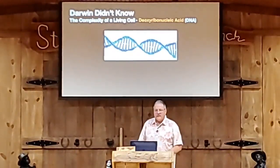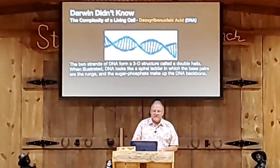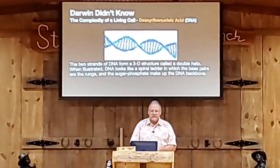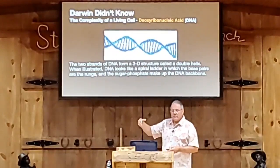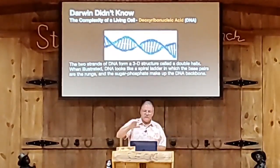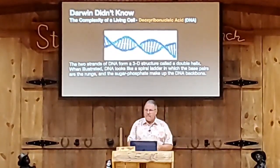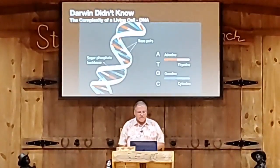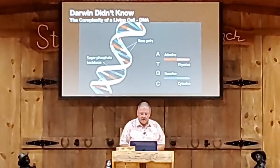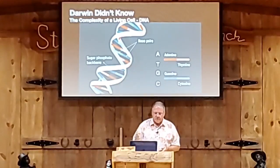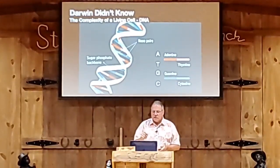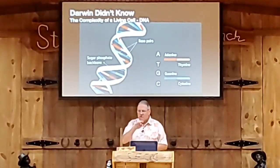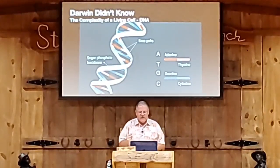Who knows what that is? That's DNA — deoxyribonucleic acid. Two strands of DNA form a 3D structure called the double helix. When illustrated, the DNA looks like a spiral ladder in which the base pairs are the rungs — one base pair on each side — and the sugar phosphate groups make up the DNA backbone. A collection of nucleotides makes a DNA molecule. Each nucleotide contains three components: a sugar, a phosphate group, and a nitrogen base. There are only four different bases: adenine, thymine, guanine, and cytosine — abbreviated as ATGC — the letters of DNA coding. The sugar in DNA is called 2-deoxyribose, and these sugar molecules alternate with phosphate groups making up the backbone of the DNA strand.